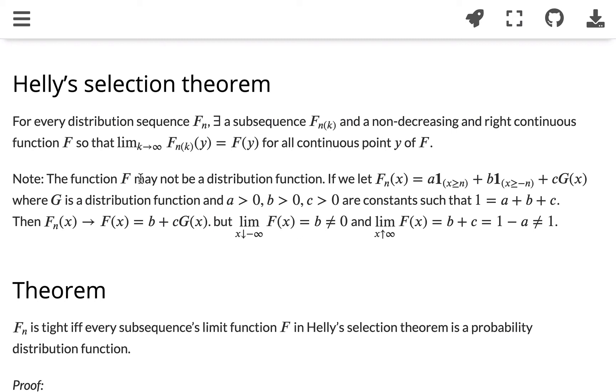So like I said, the function f may not be a distribution function. We can see an example here. If we define fn to be a function of a times indicator function of when x is greater than or equal to n, plus b times indicator function plus c times a distribution function g.